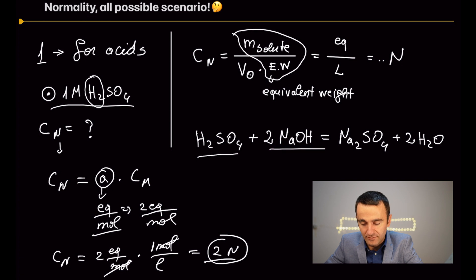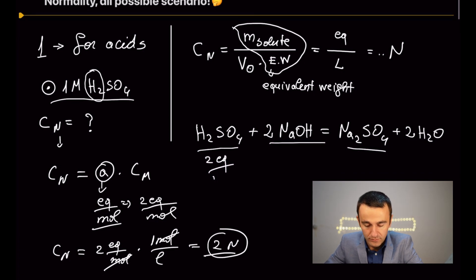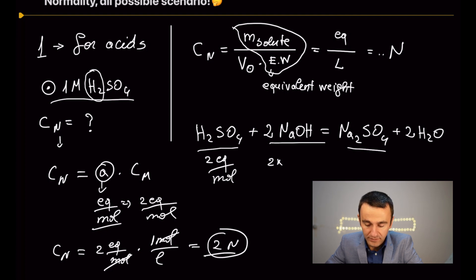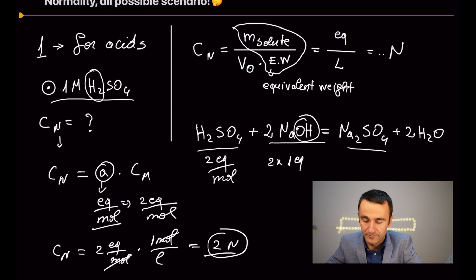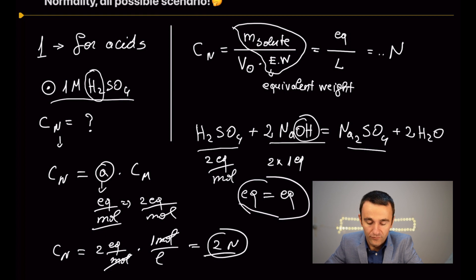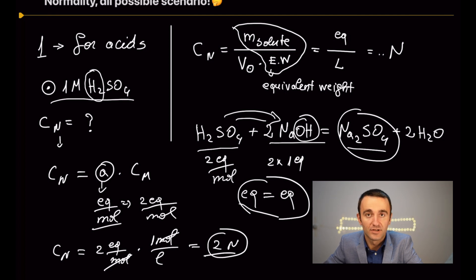Here is a reaction that demonstrates that sulfuric acid has two equivalents per mole: it needs two moles of sodium hydroxide (a base), each containing one equivalent — that is, one hydroxide ion. The number of equivalents must be equal on both sides for the reaction to proceed completely to products in a titration.